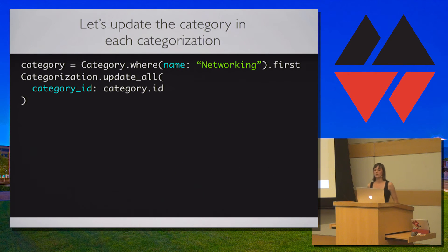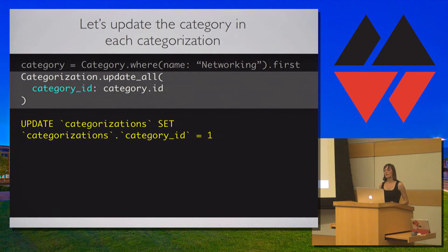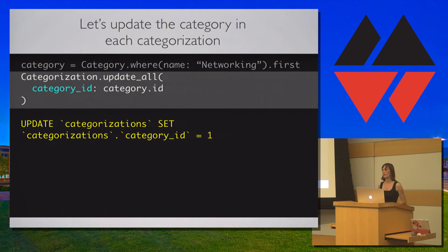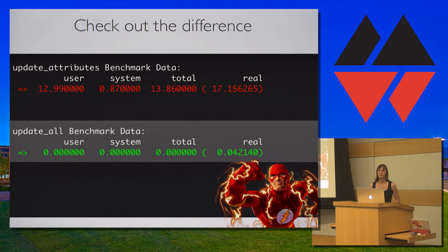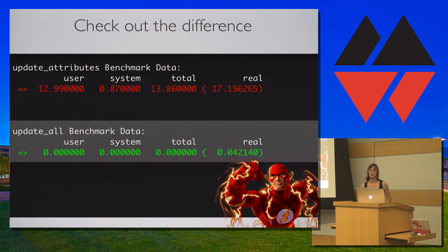A better way to update all categorizations from the co-workers category to the network category is to use update_all. This method creates a single SQL update statement, updating all categorizations' category_id at once without instantiating objects or running save on each one. Again, because we aren't saving individual objects, no callbacks will be fired. The first approach takes 14 seconds; update_all is so fast for 10,000 records that it barely registers any time at all.